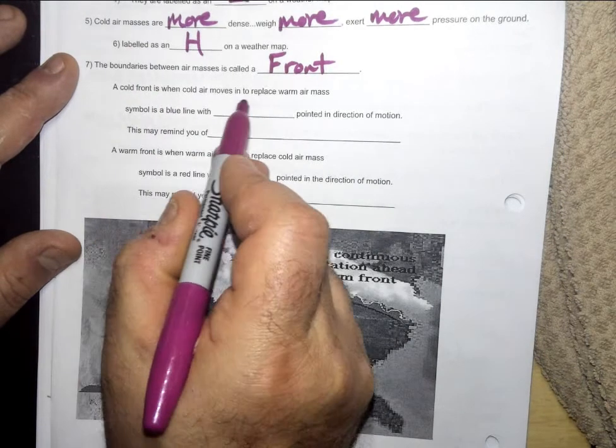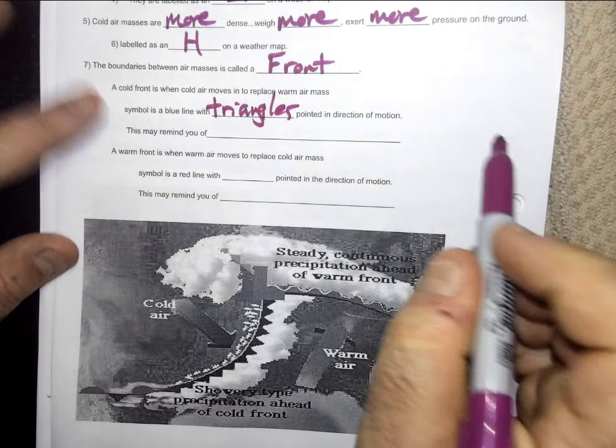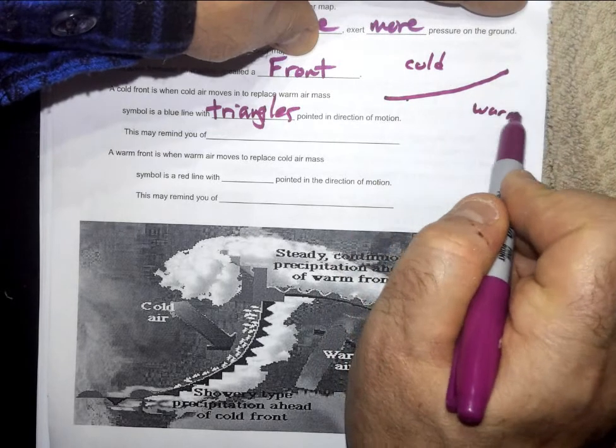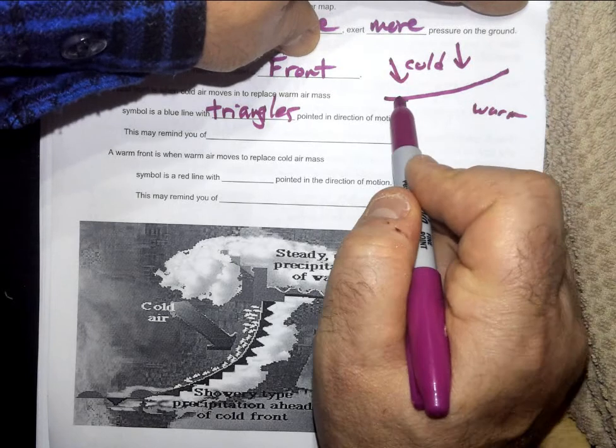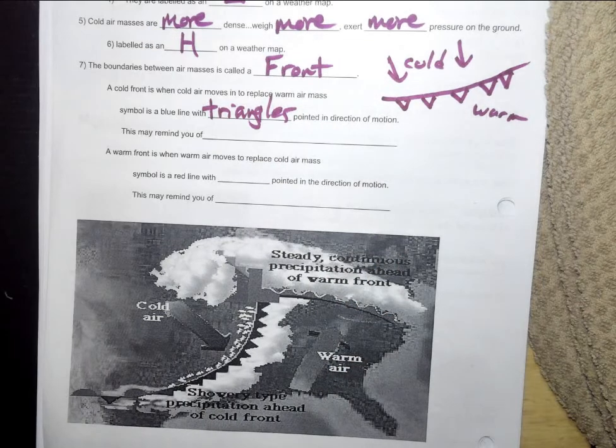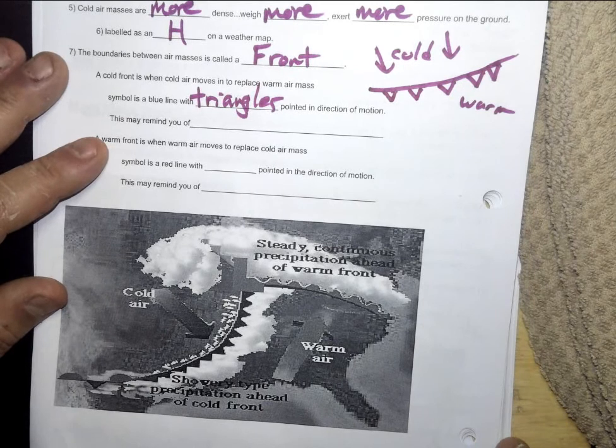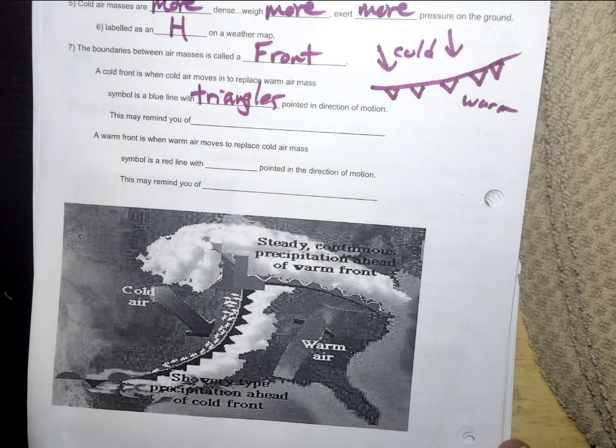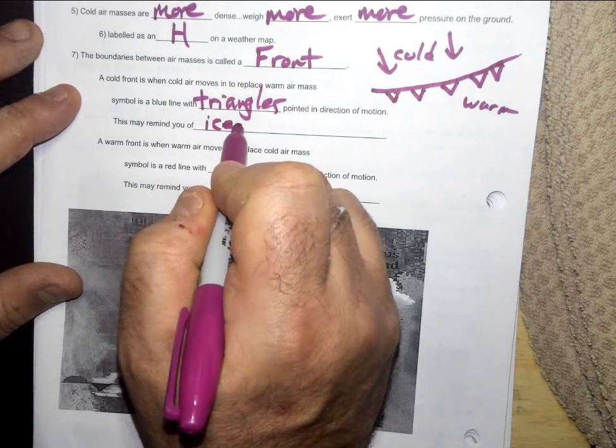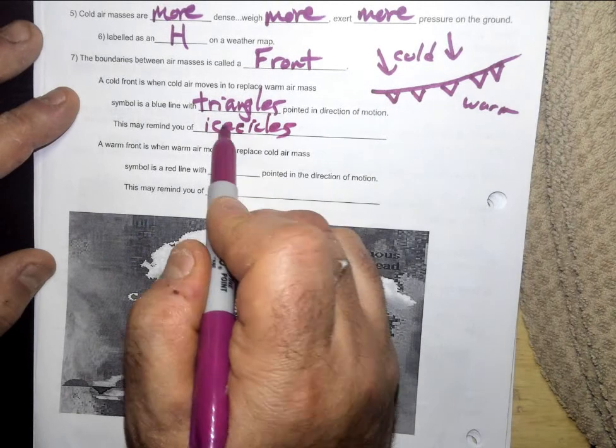Cold air front is when cold air moves in to replace warm air. The symbol is a blue line with triangles pointed in the direction of motion. So if I had a front here where this cold is up there and warm air is here, and the cold air is moving in this direction, I would have triangles like this. The triangles are pointing in the direction of movement. And I think of those triangles as like icicles on a house roof line. To remind me that triangles are cold, icicles are cold. This reminds you of icicles.